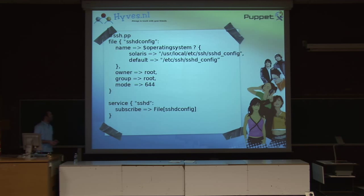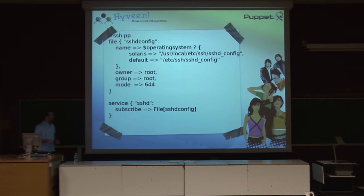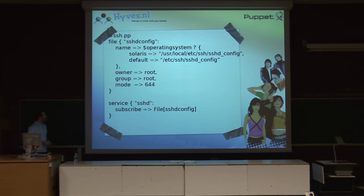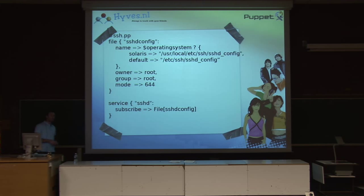In this example I want the file to always be owned by root, group root, with mode 644. So if a user changes this on the system and Puppet runs again — you can set intervals at which Puppet runs — it will correct those changes. If somebody changed the file to nobody/nobody, the first time Puppet runs it will change it back to root. So it's also a tool to detect and correct errors users made. The last part is the service — in this example you're subscribing the file from above to the service sshd. So if anything changes in the sshd config file, Puppet will actually restart your sshd daemon with the new settings, so you don't have to do it manually.